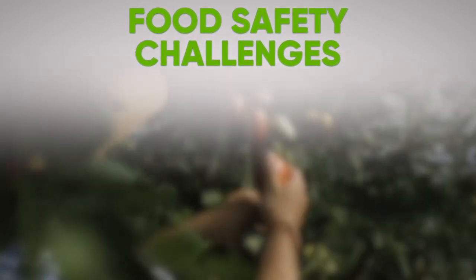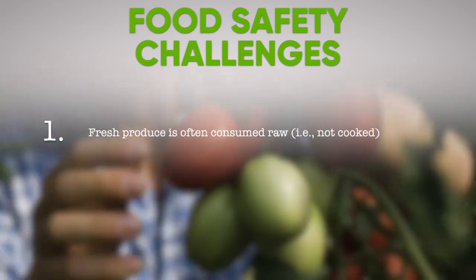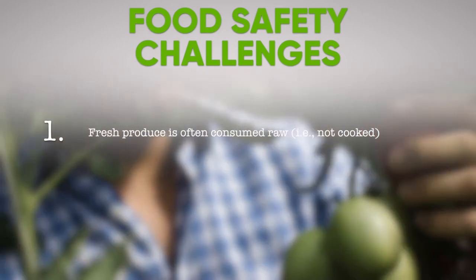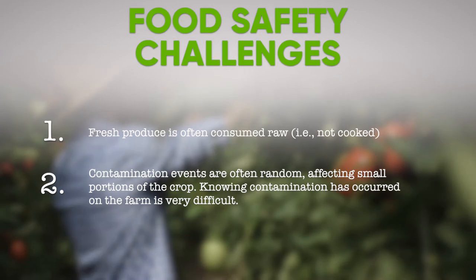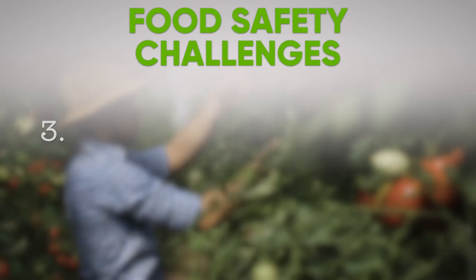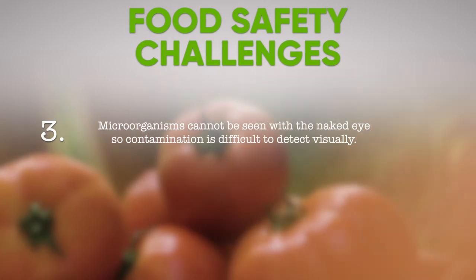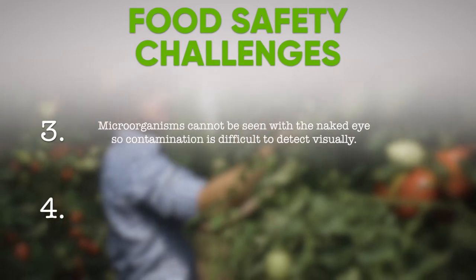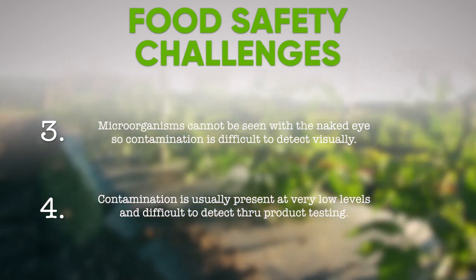Food Safety Challenges. Food safety can be challenging for a number of reasons. 1. Many fruits and vegetables are consumed raw, so there is no cooking or kill step to destroy pathogens that may be on the produce. 2. Contamination events are often random, affecting small portions of the crop, so knowing contamination has occurred is difficult. 3. Microorganisms cannot be seen with the naked eye, so contamination is difficult to detect visually. 4. Contamination is usually present at very low levels and difficult to detect through product testing.